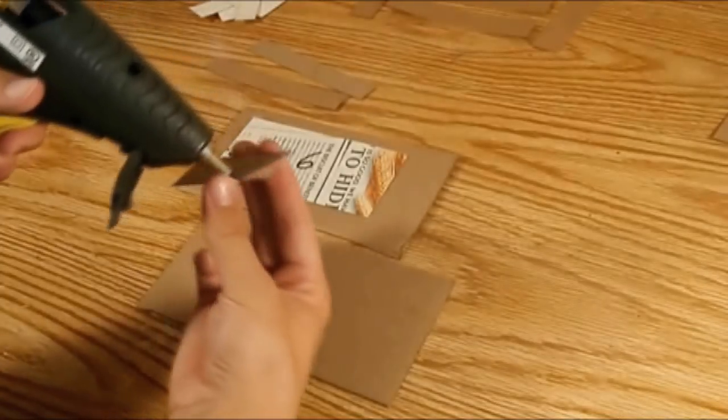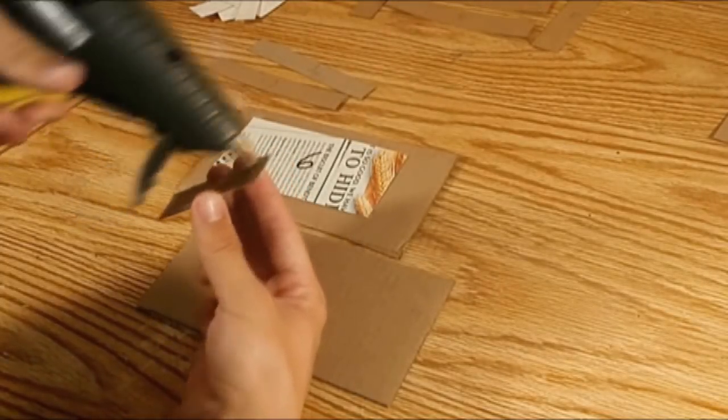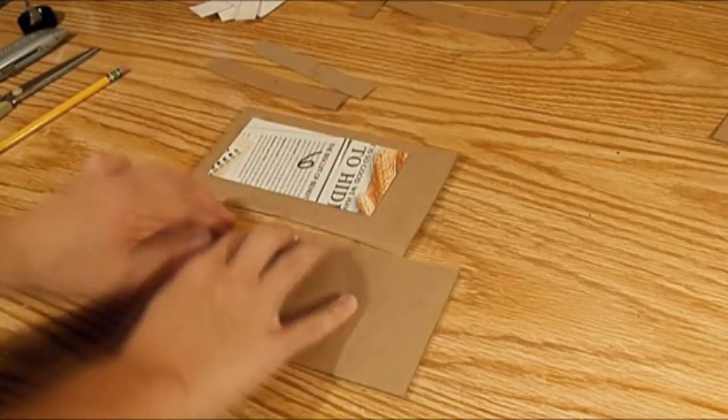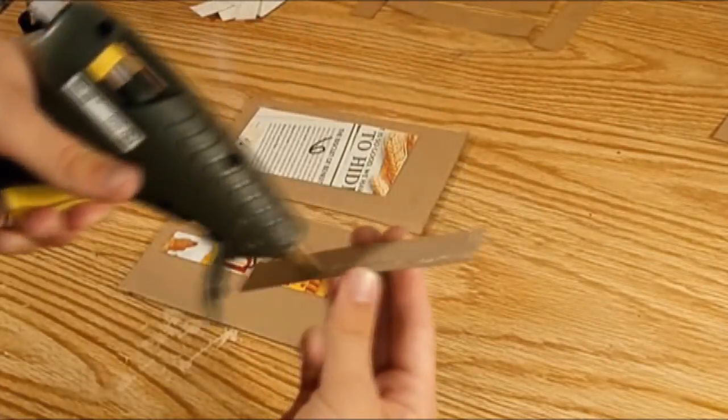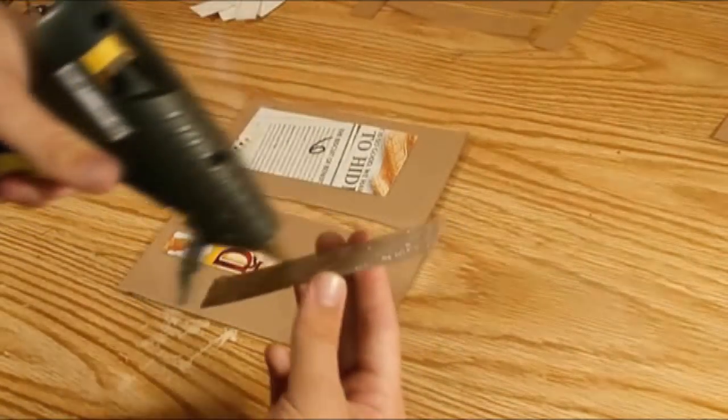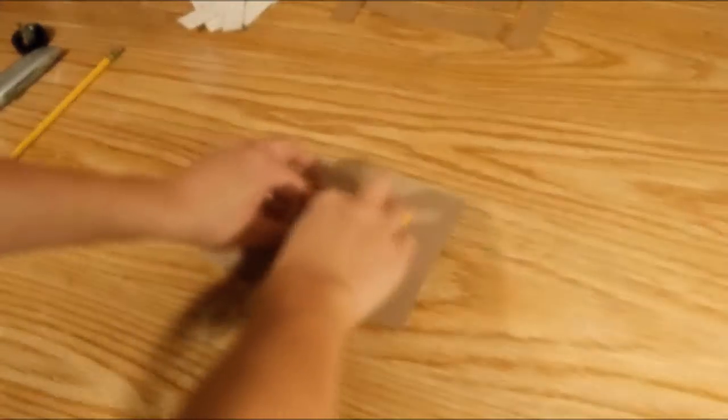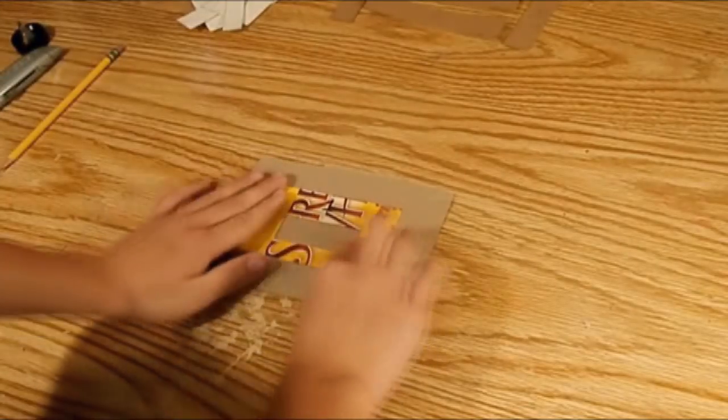Then hot glue every single piece, with the exceptions of the ones we made with templates 1, 4, and 5, onto some regular cardboard. And for the piece we made with template 1, I glued it onto another piece of cereal box cardboard, just to make it sturdier.